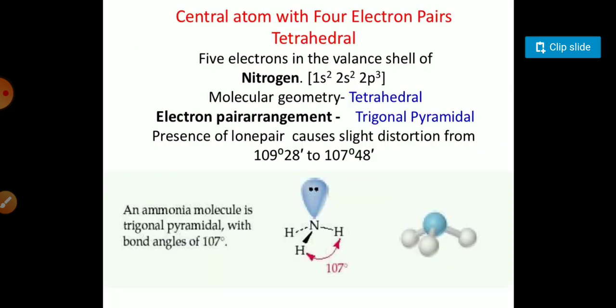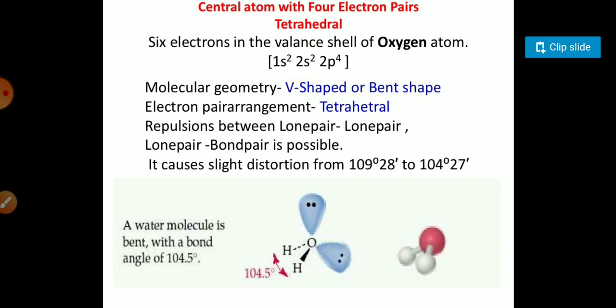Now some other examples in presence of lone pairs. You can see in ammonia, the tetrahedral structure with one lone pair present on nitrogen, so the structure is distorted and a trigonal pyramidal structure is formed. For H2O, valence electrons of the oxygen atom are 1s2 2s2 2p4, so the molecular geometry is V-shaped or bent shape and the electron pair arrangement is tetrahedral. The repulsion between lone pair-lone pair and bond pair-bond pair causes slight distortion from 109 degrees 28 minutes to 104 degrees 27 minutes.